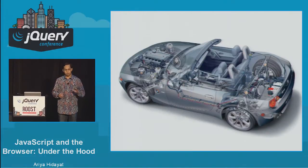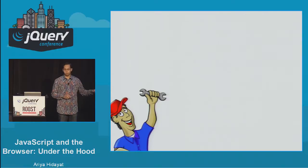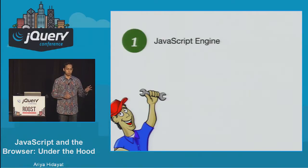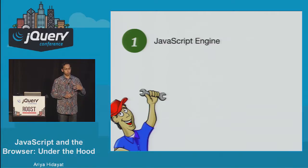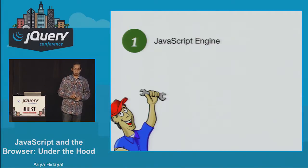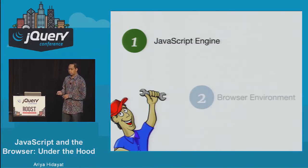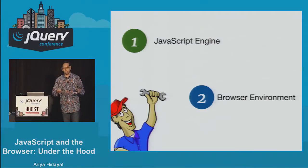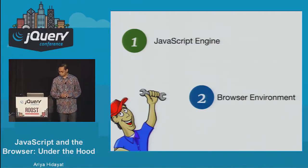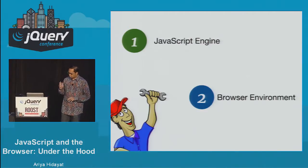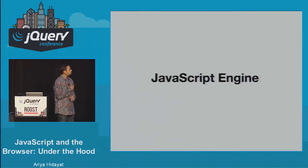There are two major parts in this talk. The first is really about the JavaScript engine itself — how it works, how it consumes your code, how it interprets your code and runs it in its virtual machine. The second part is how the JavaScript engine integrates with the browser itself. So without further ado, let's talk about the JavaScript engine.